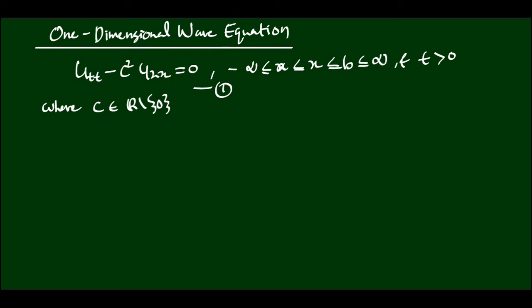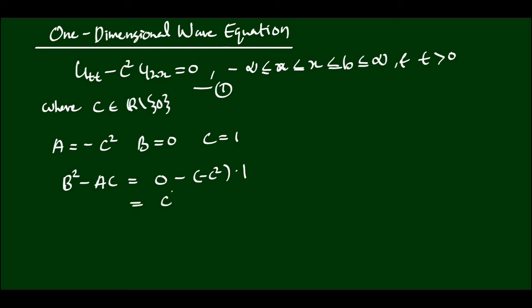Note that here the coefficient of Uxx, A, is equal to minus C squared. And B is equal to 0, that is, the coefficient of Uxt is 0. And the coefficient of Utt, which is C, is equal to 1. So, the discriminant of equation 1 is B squared minus AC, which gives 0 minus (minus C squared)(1), equal to C squared, which is greater than 0. So we can conclude: equation 1 is hyperbolic.